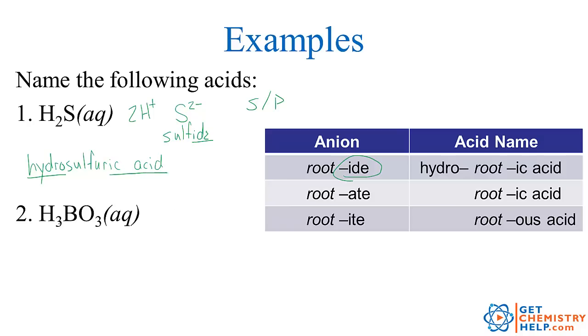How about this one? H3BO3 aqueous. If I pulled off three hydrogens, so if three hydrogen ions came off that would leave BO3 and the charge would have to be three negative. How do we name this? We learned this is called borate ion. Oh ate. So if I find ate, ate says just change the ending to ic acid. So borate must have made boric acid.